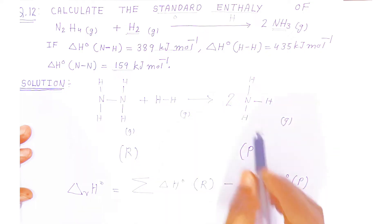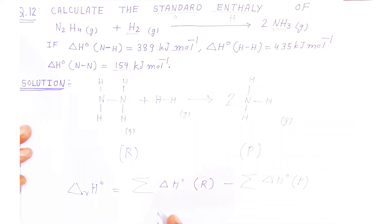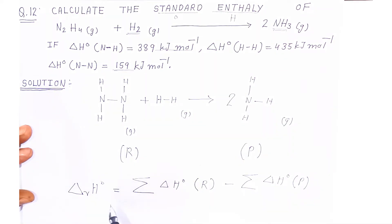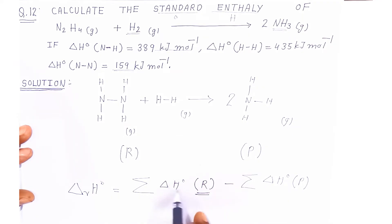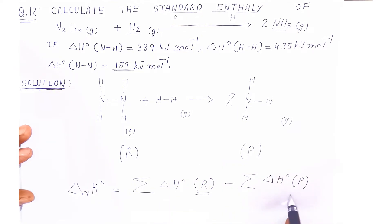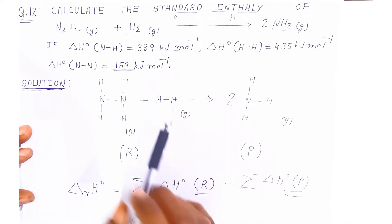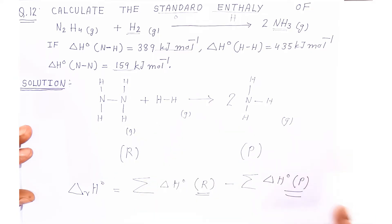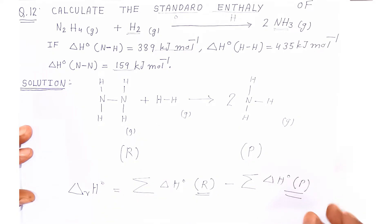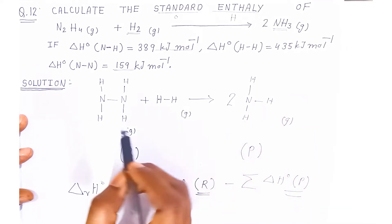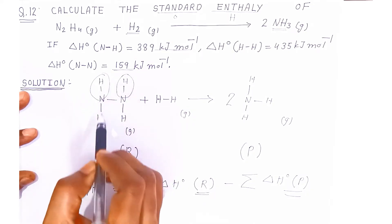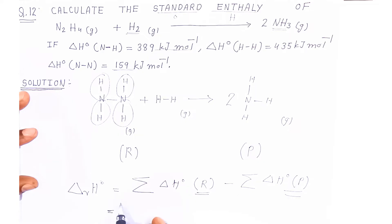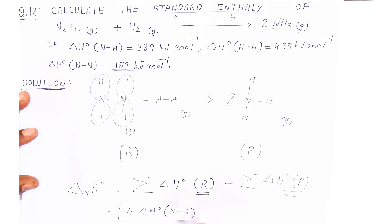Now we apply this formula. On the reactant side, counting all bonds: in N₂H₄ there are four N–H bonds. So we write 4 × ΔH°(N–H). There is also one N–N bond, so we add ΔH°(N–N). From H₂ there is one H–H bond, so we add ΔH°(H–H).